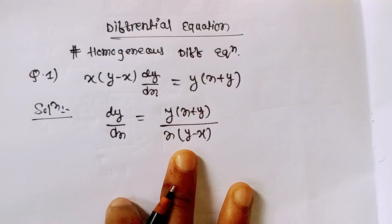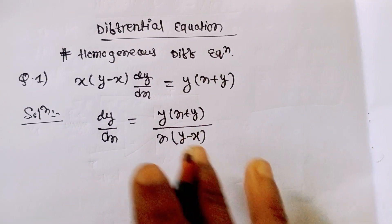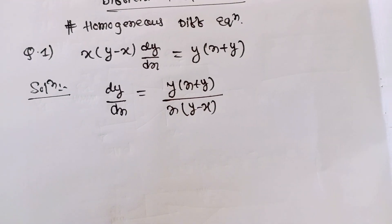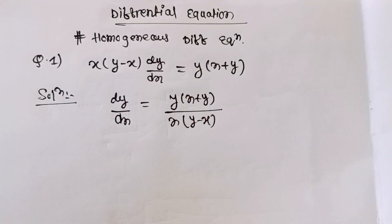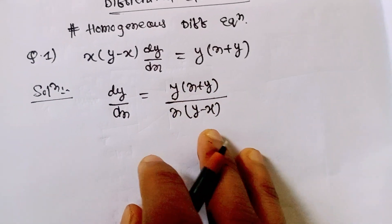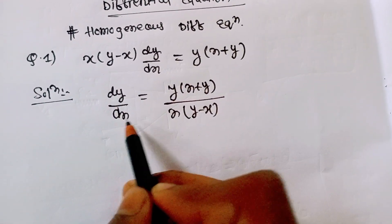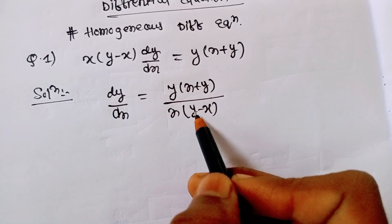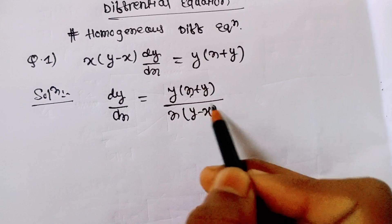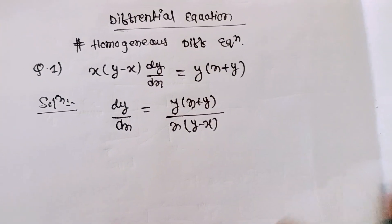अब हम कैसे पता करेंगे कि यह homogeneous differential equation है? उसके लिए देखें: y का power 1 है, x का power 1 है — ऊपर और नीचे दोनों में। तो यह homogeneous differential equation है। आप y को tx से replace करके भी confirm कर सकते हैं। यह clearly homogeneous है क्योंकि x और y के terms मिले हुए हैं — variable separate नहीं हो सकता और linear form भी नहीं है।